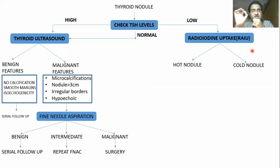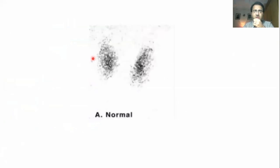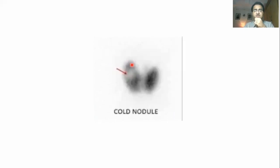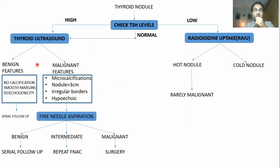If it takes too much radioactive iodine, it is a hot nodule. If it takes too little, it is a cold nodule. This is a normal uptake picture showing right and left lobes of the thyroid gland. Whenever there is a hot nodule — too much iodine uptake — it appears as a dark shadow. A white shadow means that part of the gland is non-functional, not taking up any radioactive iodine, meaning it is not producing any thyroid hormone.